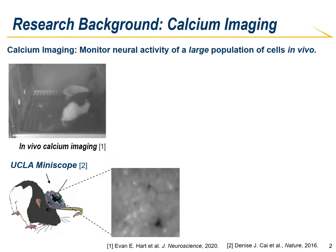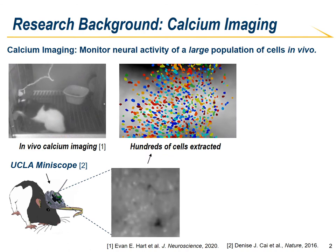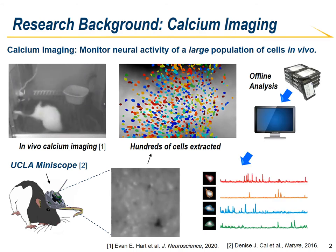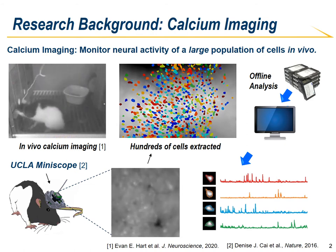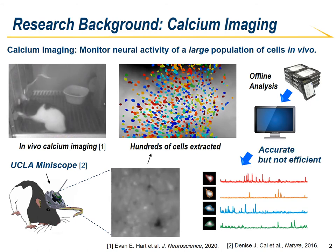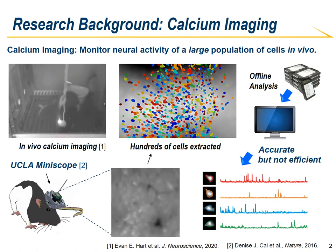Calcium imaging is an emerging technique that can monitor neural activity of a large population of neurons in vivo. The miniaturized calcium imaging microscope, the UCLA Miniscope, can monitor hundreds of cells simultaneously at subcellular resolution and 30 frames per second. Most existing calcium image analysis algorithms are performed offline on CPU or GPU, taking a full stack of images as input and performing complex matrix factorization iteratively to get both the cell footprints and the calcium traces. Although this algorithm is very accurate, it consumes very much computation time and power and may not be efficient enough for closed-loop neurofeedback applications.